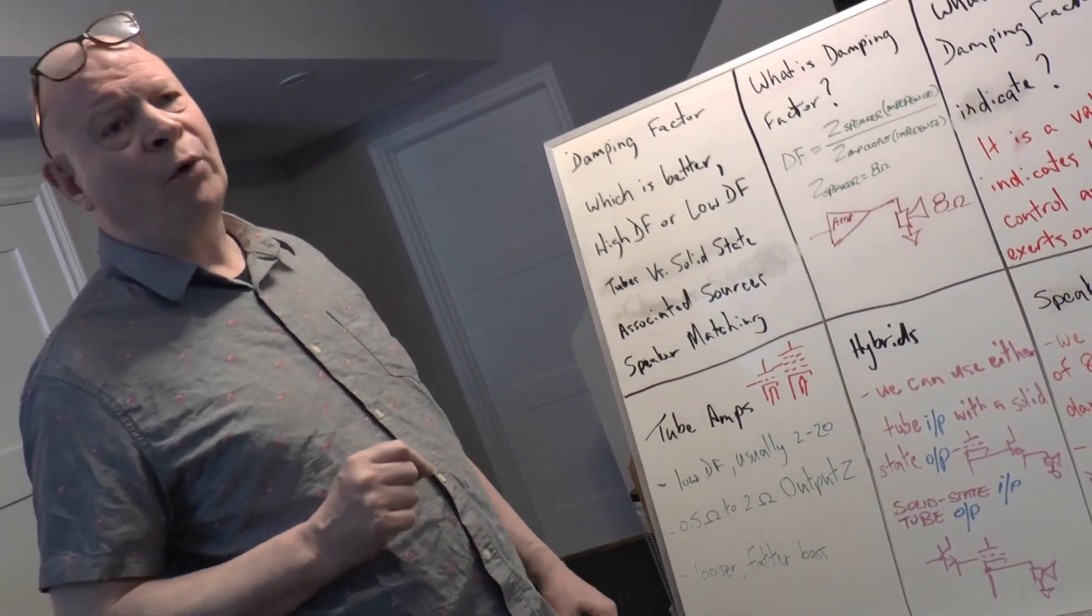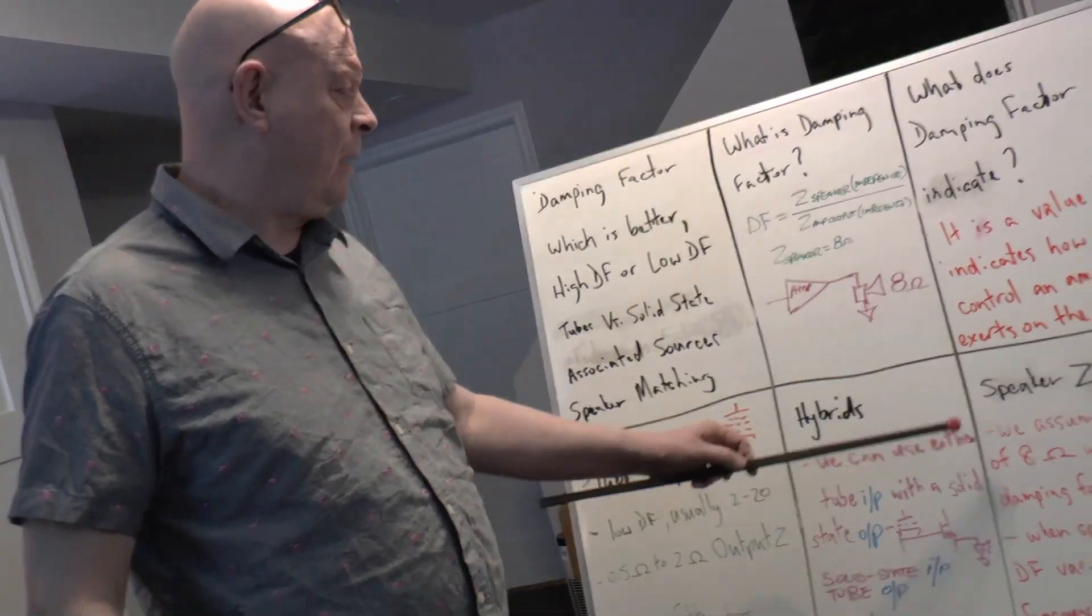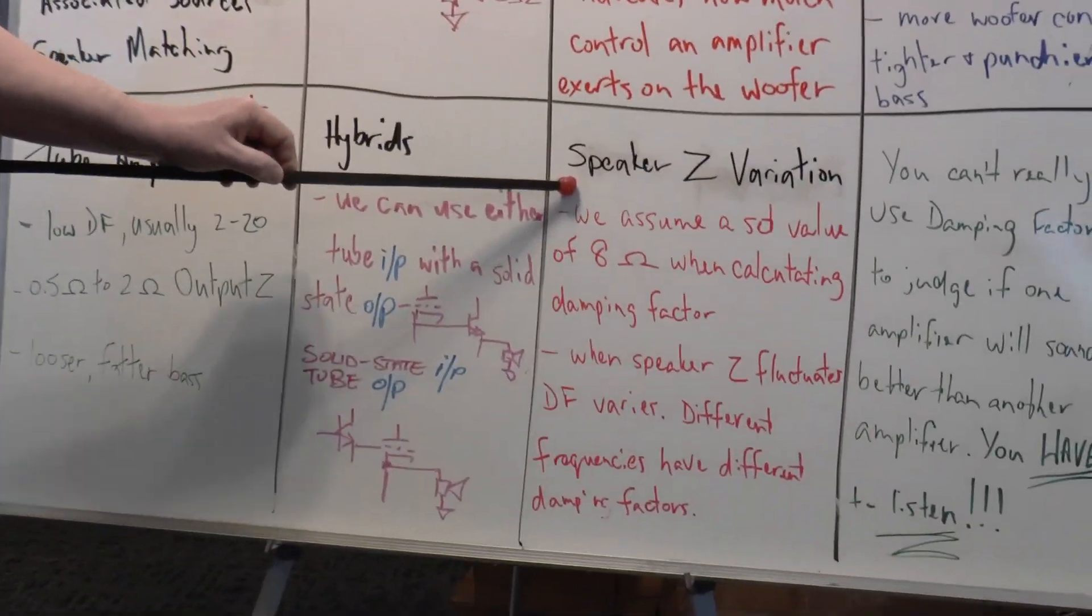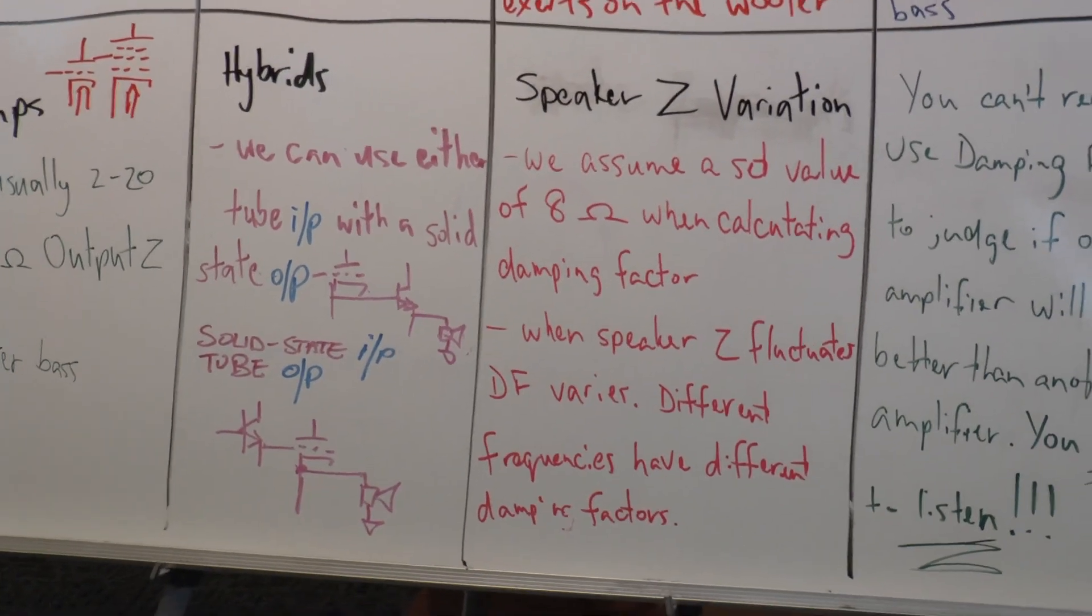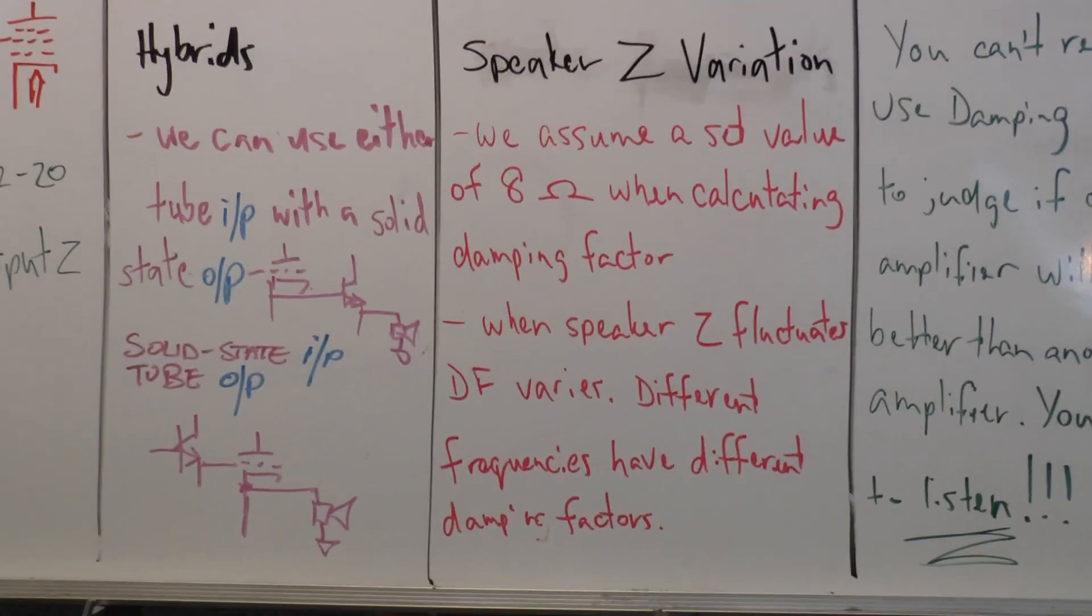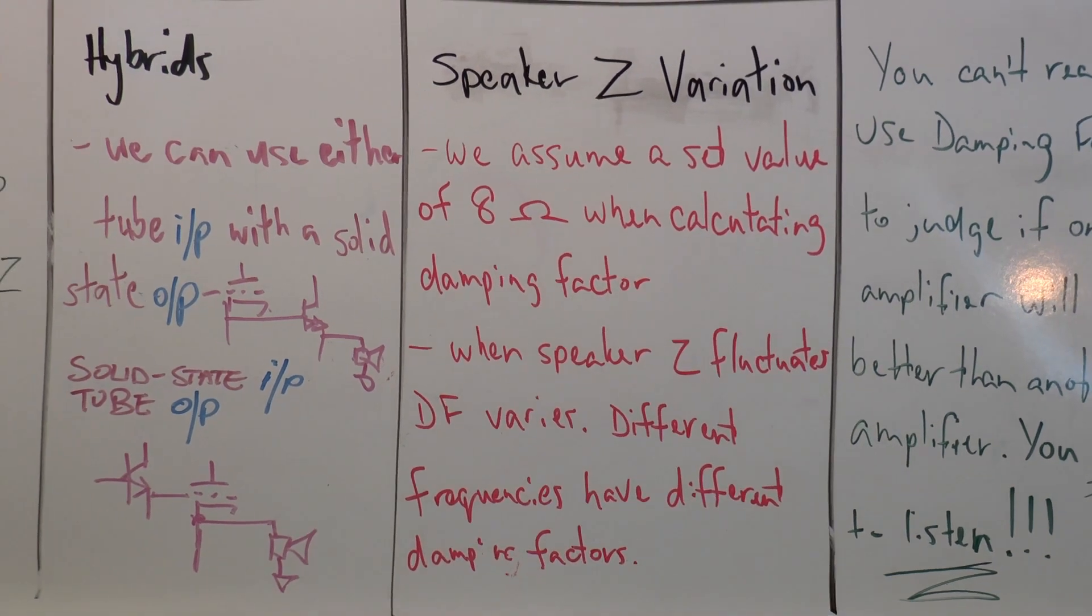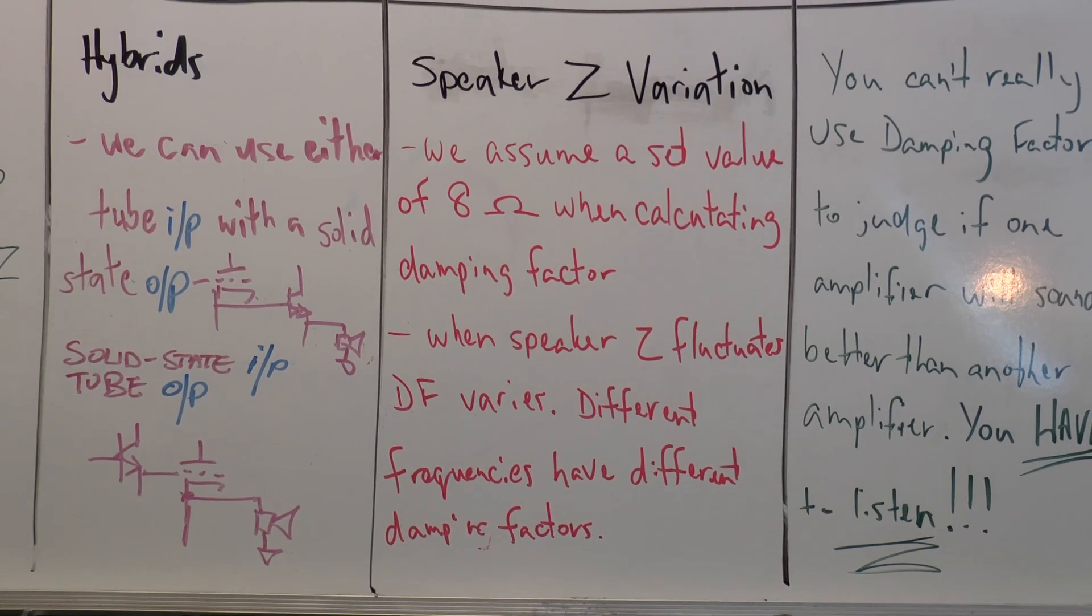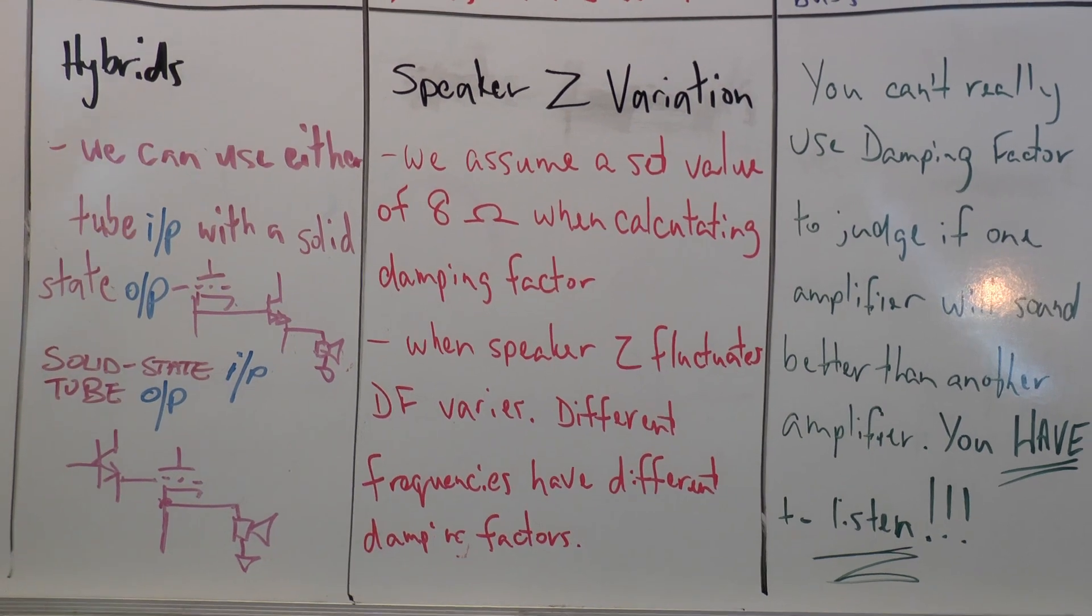There's ways that we can control this without worrying too much about damping factor. Speaker—this is a big one for me, this is an incredibly important topic here. The speaker impedance variation when you're playing music—we assume a value of 8 ohms when we're calculating damping factor, but when you're playing music, speakers fluctuate up and down, some more radically than others.